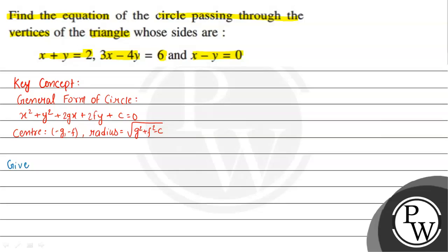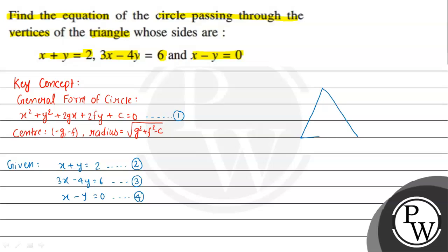The given equations are the lines forming a triangle. The first equation is x plus y equal to 2. The next equation is 3x minus 4y equal to 6, and the third is x minus y equal to 0. These three straight lines form a triangle, so let us consider this is the triangle formed by these equations.